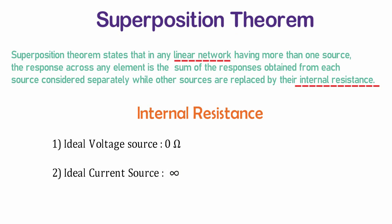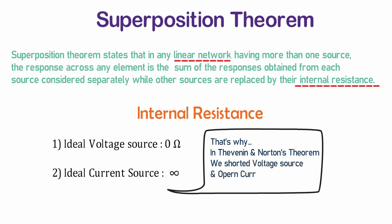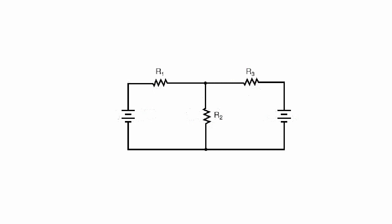Due to this internal resistance, we are shorting voltage source and opening current source in the Thevenin's and Norton's theorem. For understanding this theorem, let's take one example.